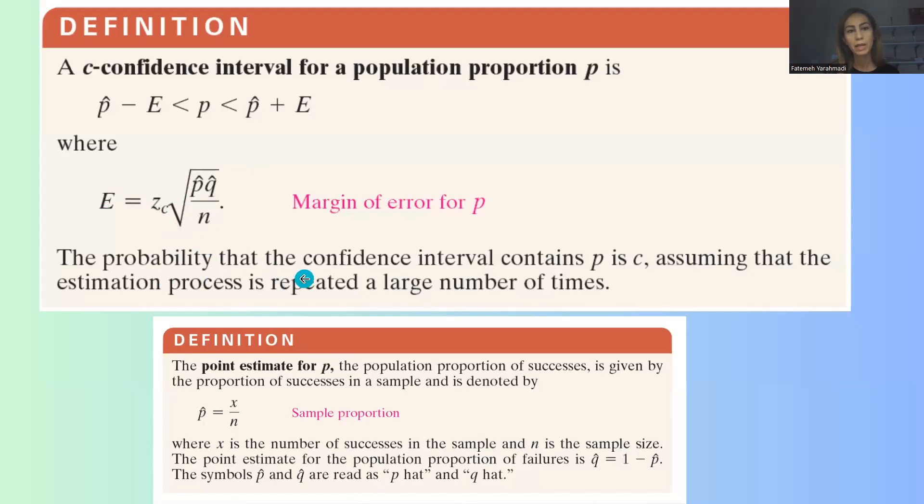The probability that the confidence interval contains p is c. C is the level of confidence, assuming that the estimation process is repeated a large number of times. Remember that the point estimate for population proportion is a single point estimator coming from your sample. You take a sample and we find the sample proportion.